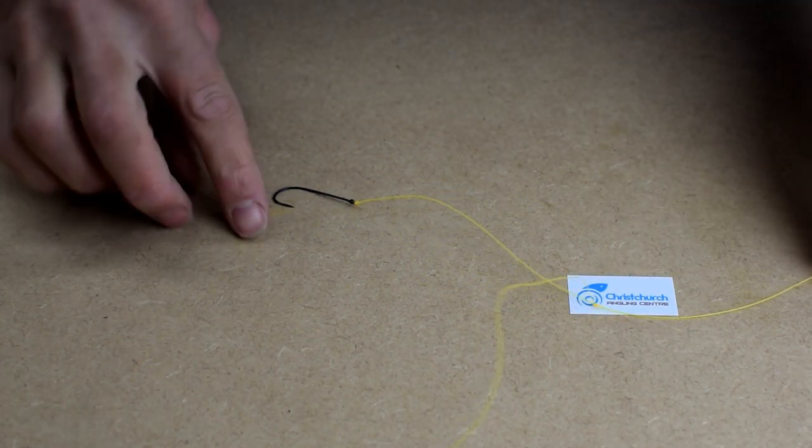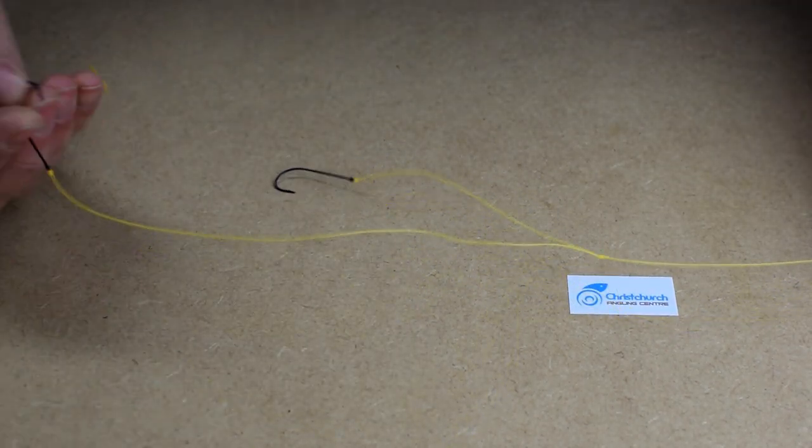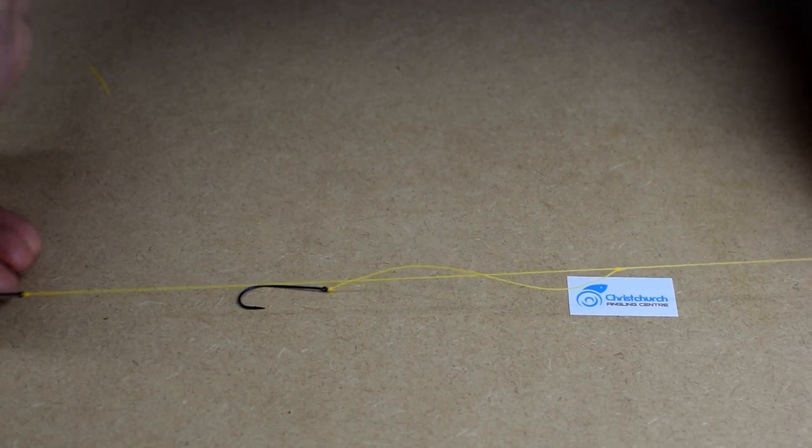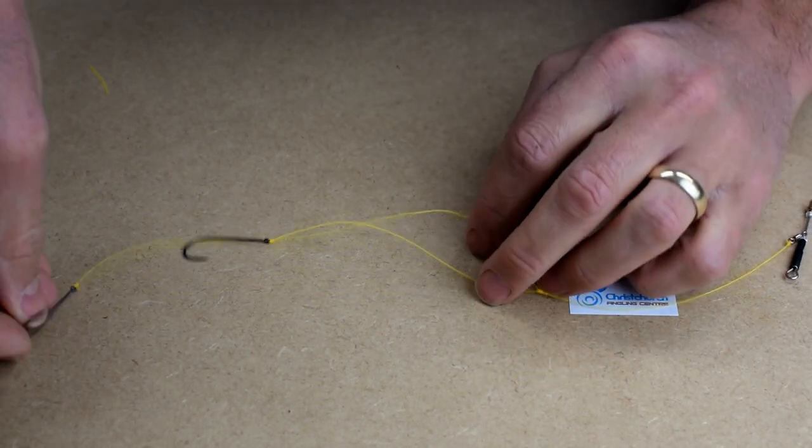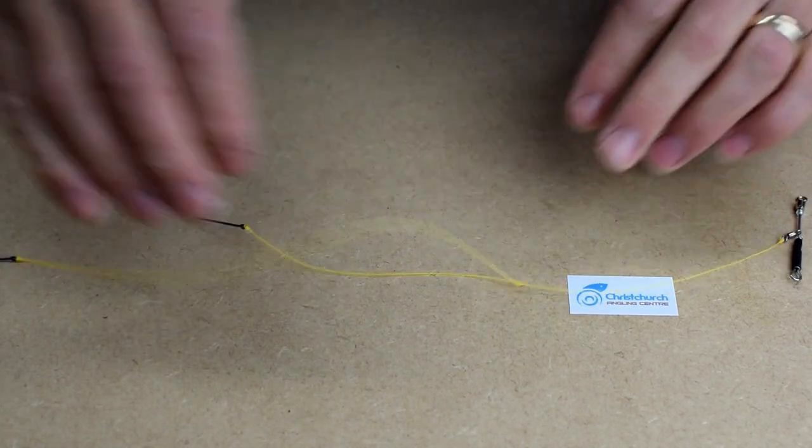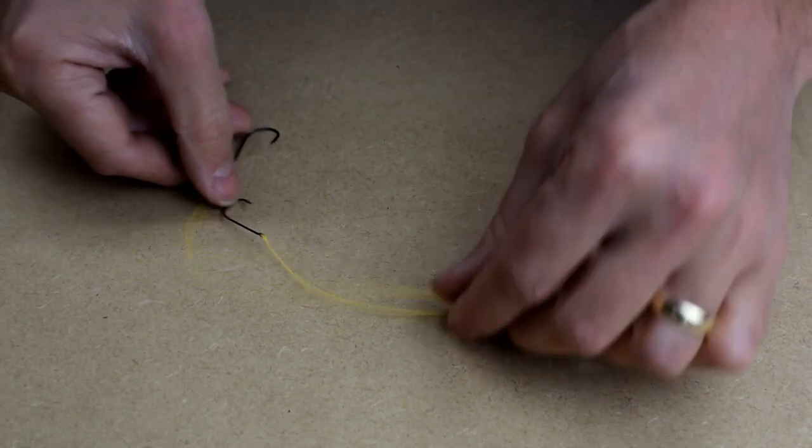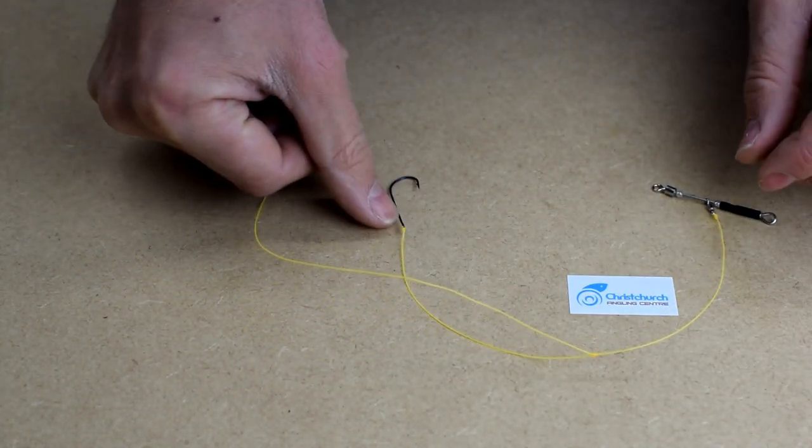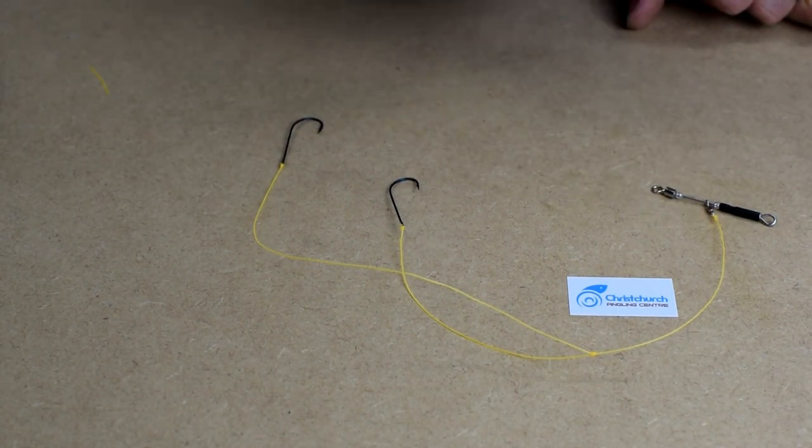And here we have our little one below. It's just become a two below. So we're going to have a two hook earth rig. If you can see all that well enough. And you can add a third if you like.